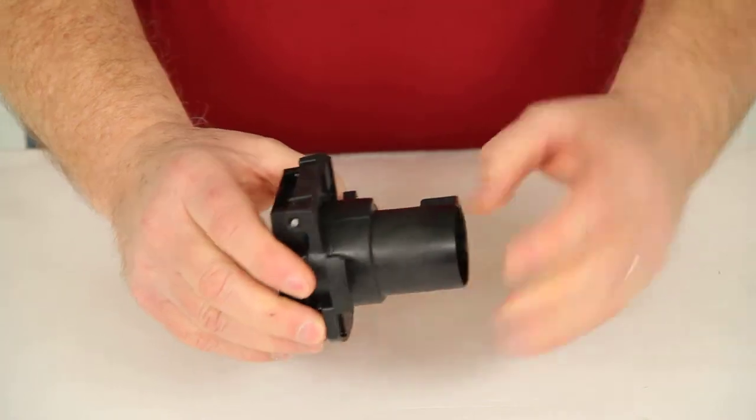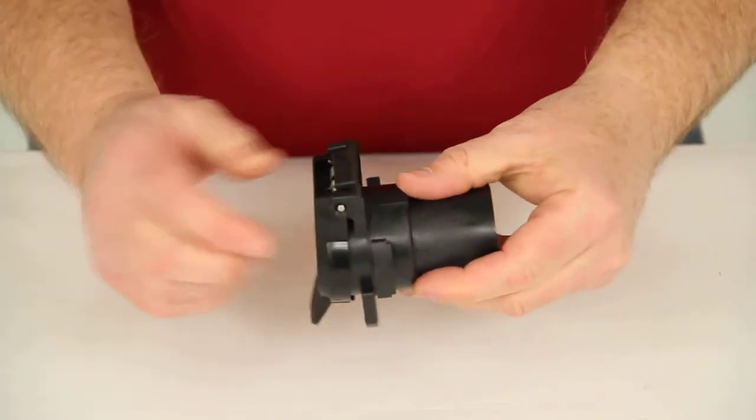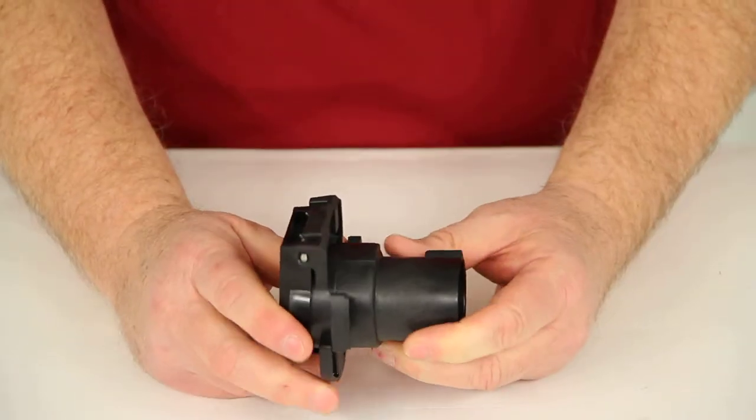When this is installed on the bumper, this will actually angle towards the cap here, which if any moisture does get inside, it will go down that drain slot and drain out.